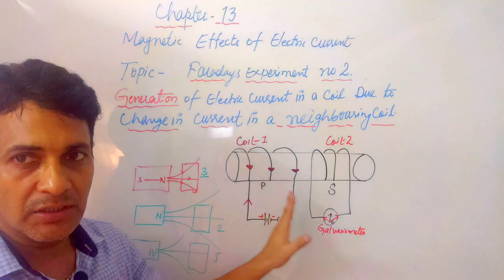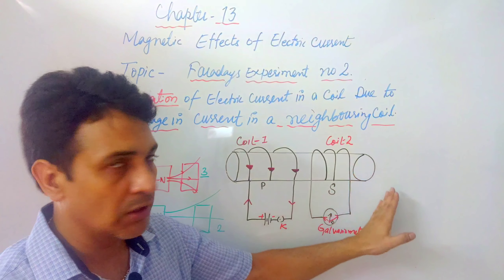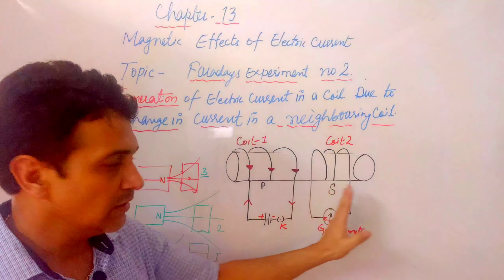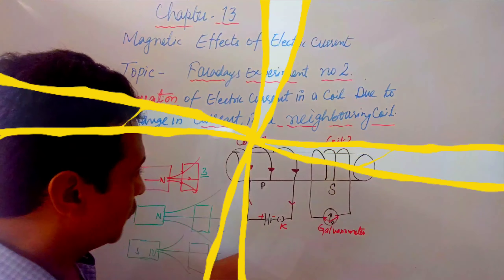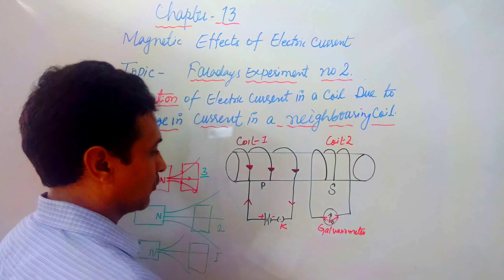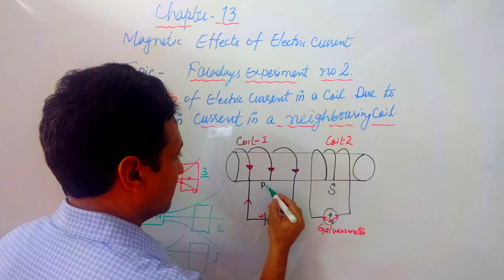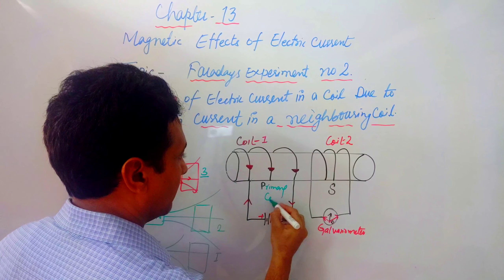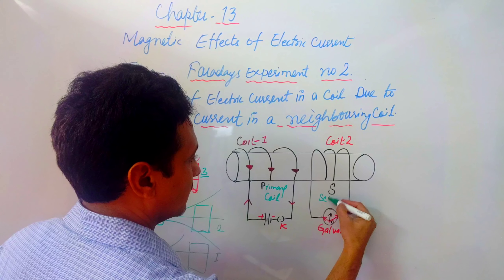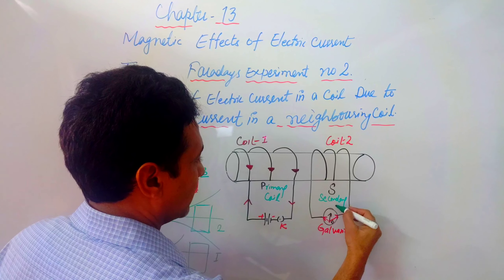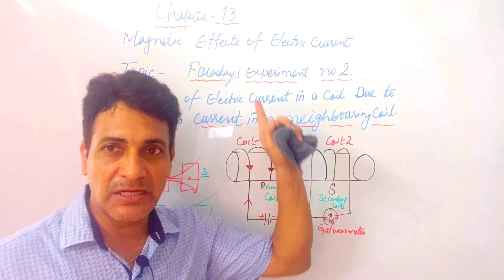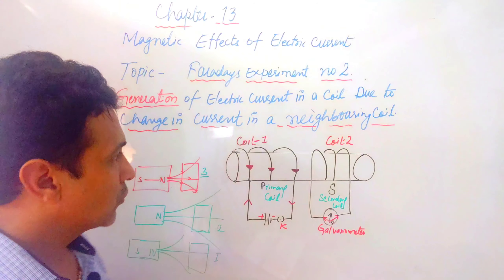This happens without any actual contact. You can see here there are two coils: coil number one is the primary coil, represented by P, and the secondary coil, represented by S.